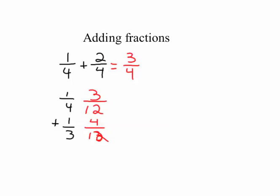Now they both have a common denominator, and three-twelfths plus four-twelfths is seven-twelfths.